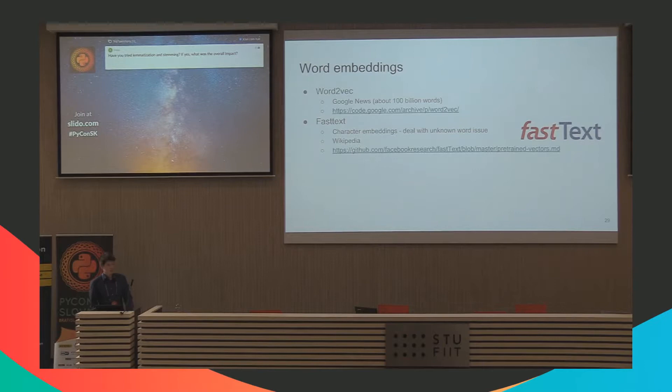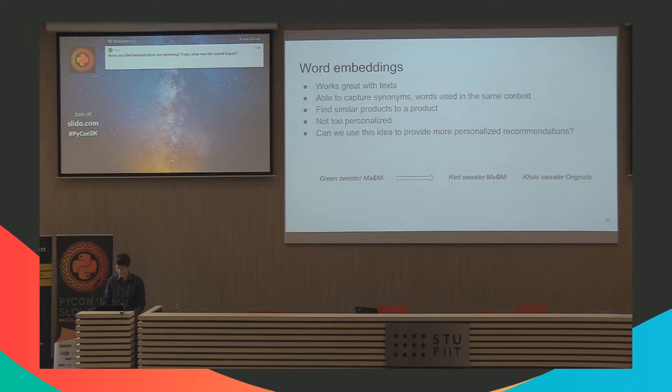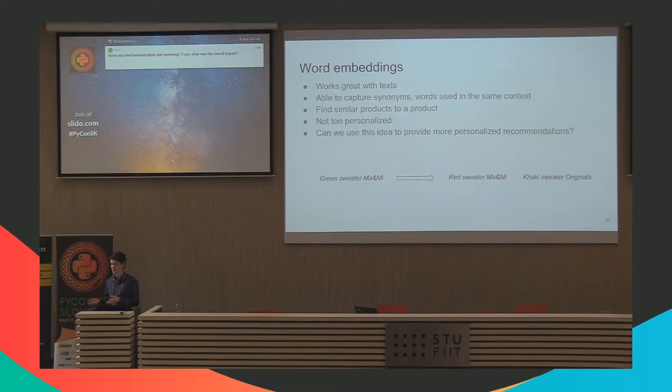You can train embeddings yourself or download pre-trained ones from the internet, for example trained on the Google News dataset or the full Wikipedia in different languages. Word embeddings work great with text and can capture synonyms and contextually related words, enabling us to find similar products. However, if customers are viewing the same product, they would get the same recommendations since it's not personalized.